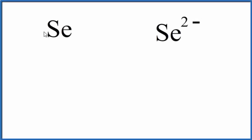In this video we'll draw the Lewis structure for Se and Se 2 minus. The first thing we need to know is how many valence electrons we have for Se, for selenium.